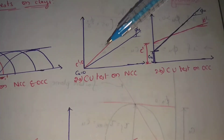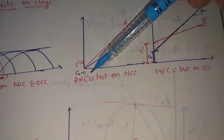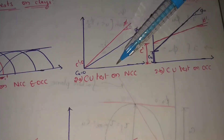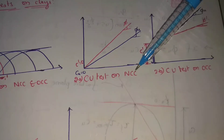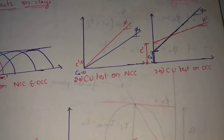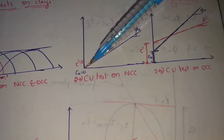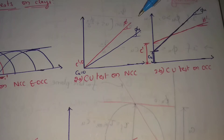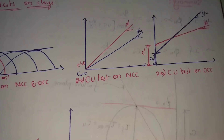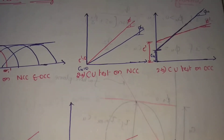Consolidated CU test means consolidated undrained test on NCC soils — normally consolidated clay. The graph goes on, and this angle is φ. φU means apparent angle of shearing resistance.